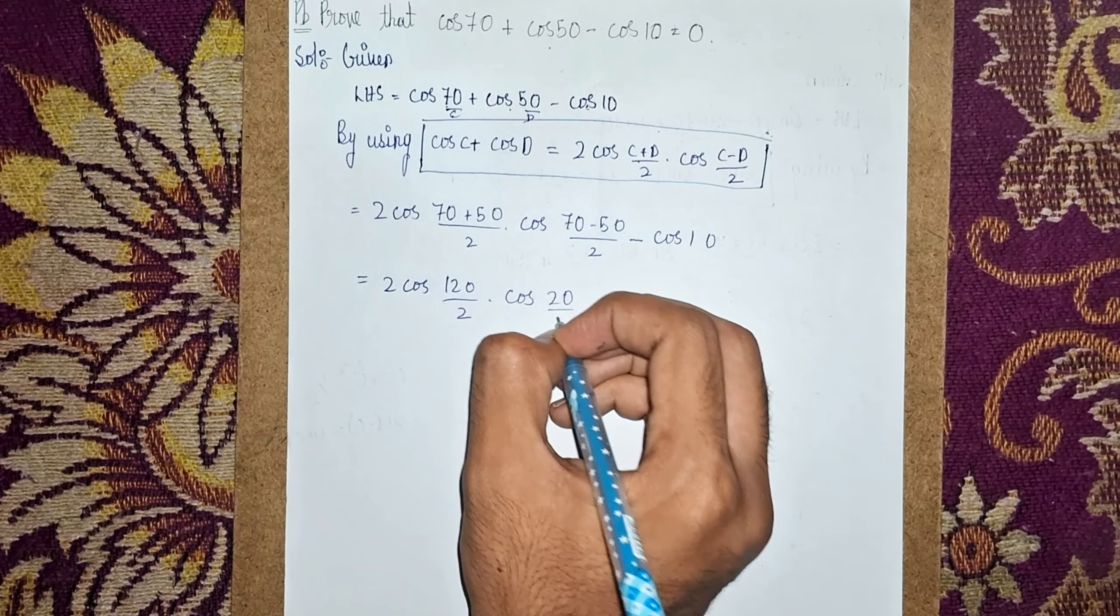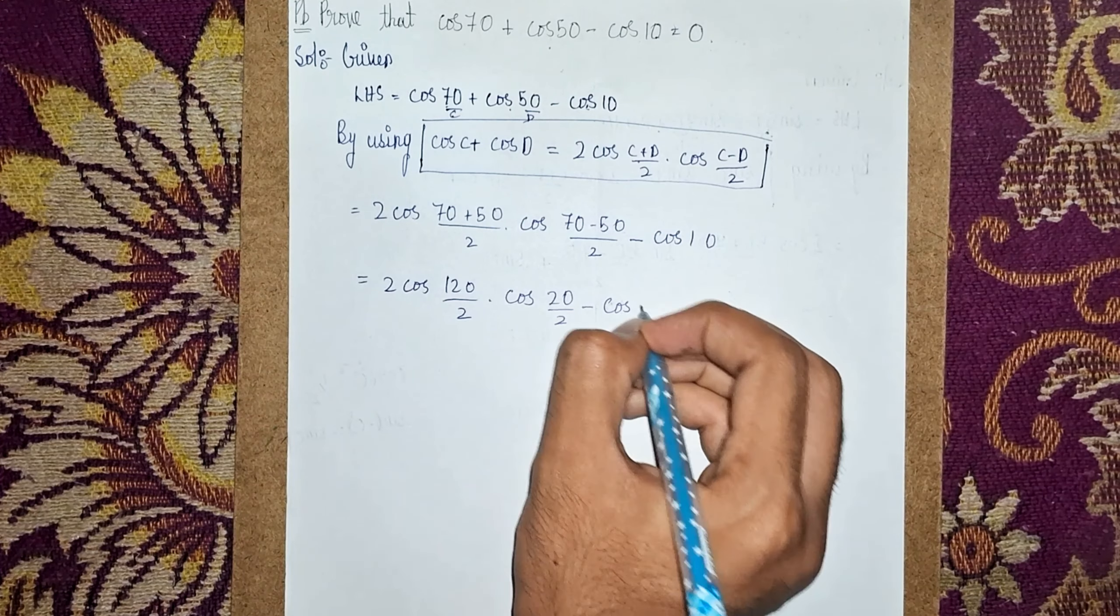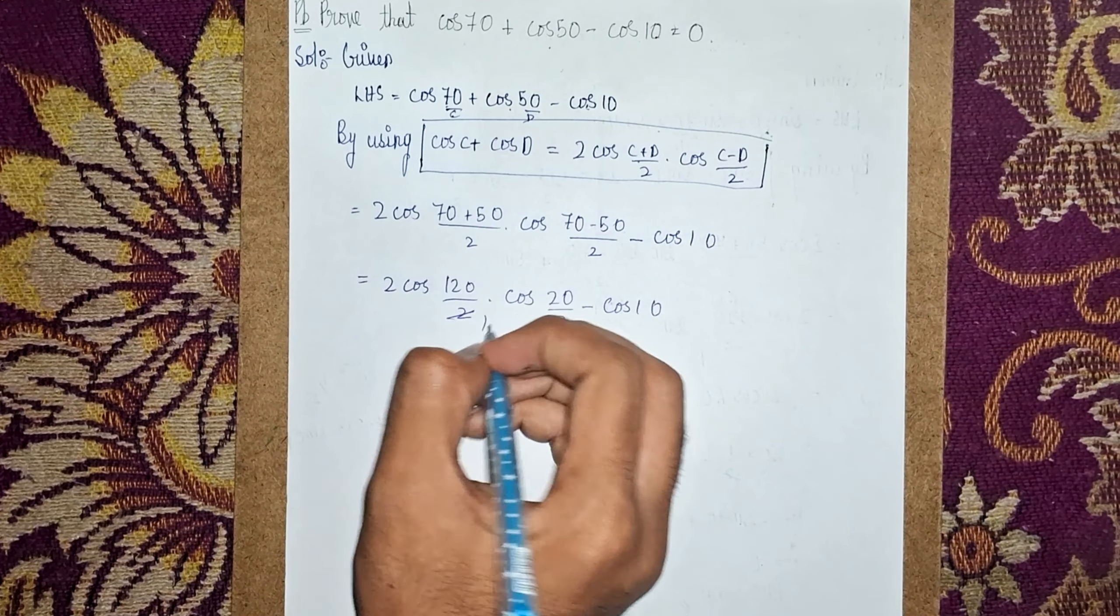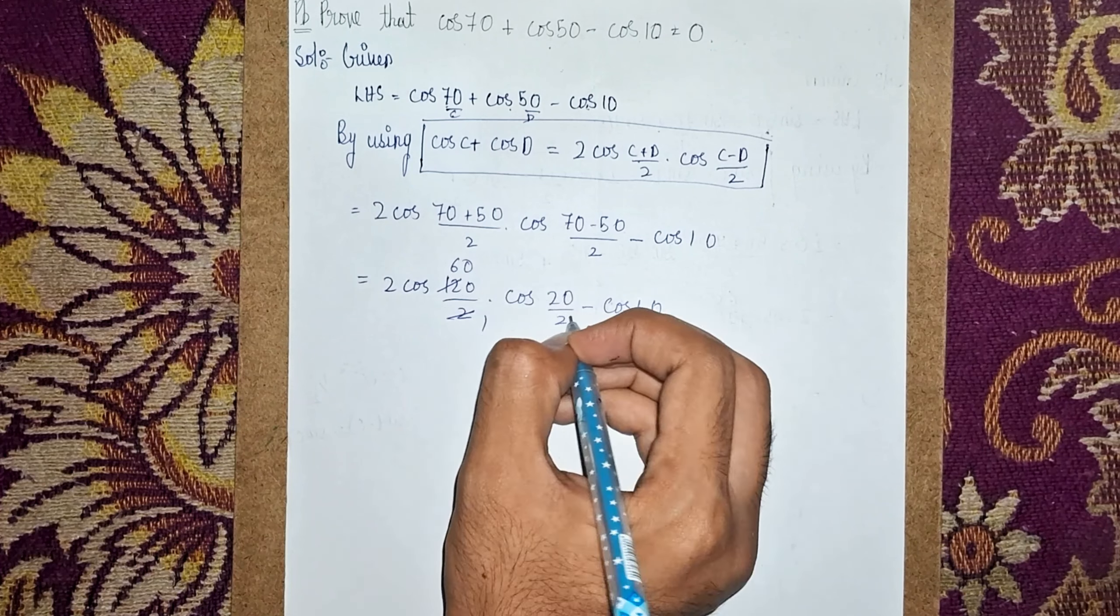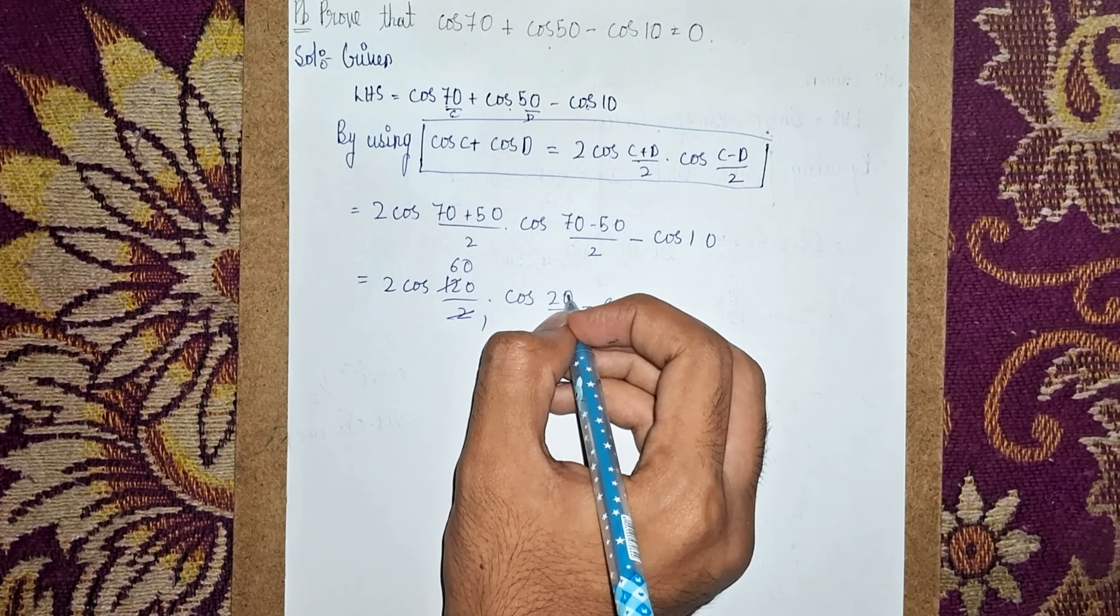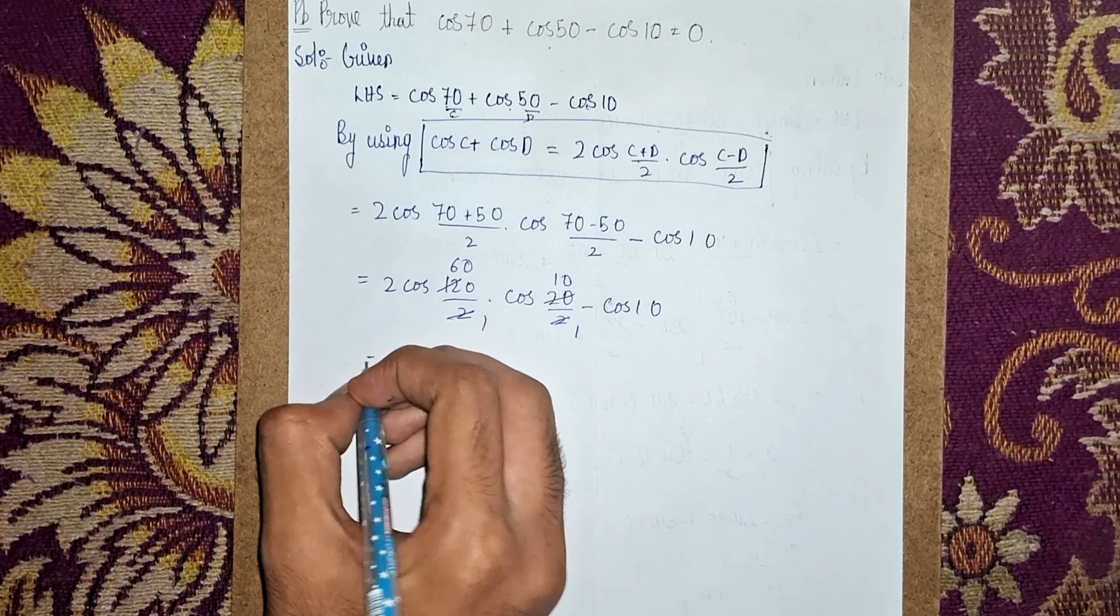20 by 2, then minus cos10°. Then here 2 ones are 2 and 0 as it is. 2 ones and 2 tens are 20. Now equal to 2 cos60° × cos10° - cos10°.